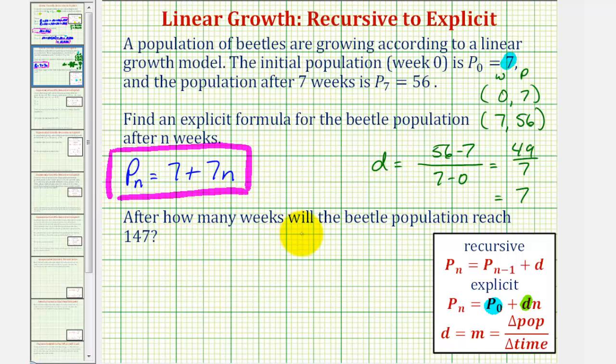Now we want to know after how many weeks the beetle population will reach 147. Notice this 147 is a population, not the number of weeks. So pₙ = 147, and we want to solve for n. We need to solve the equation 147 = 7 + 7n.